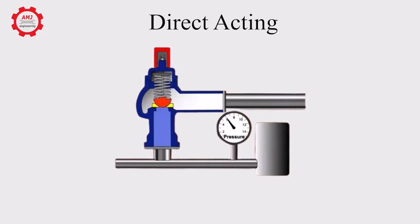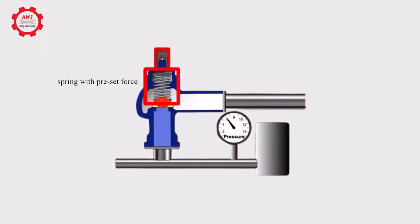Two types of pressure relief valves are there. Direct acting. A direct acting valve may consist of a poppet or ball, held exposed to system pressure on one side and opposed by a spring of preset force on the other.